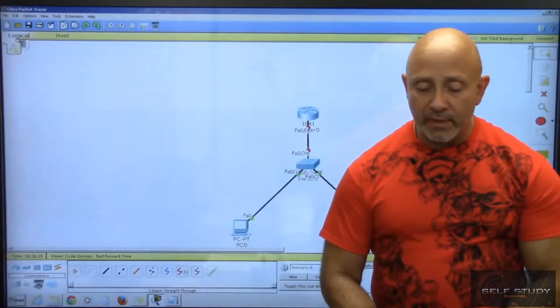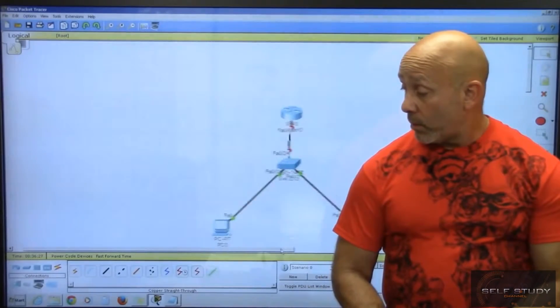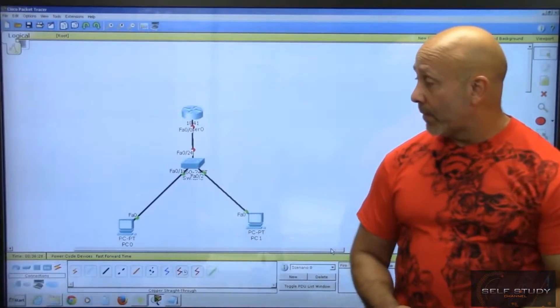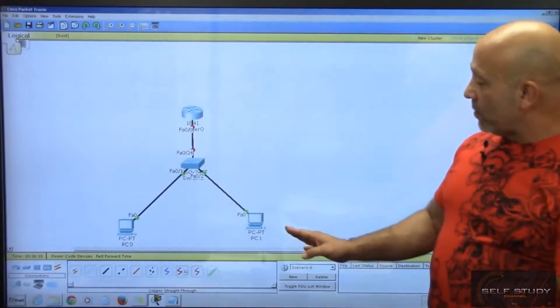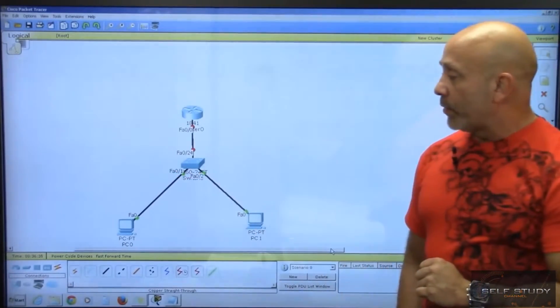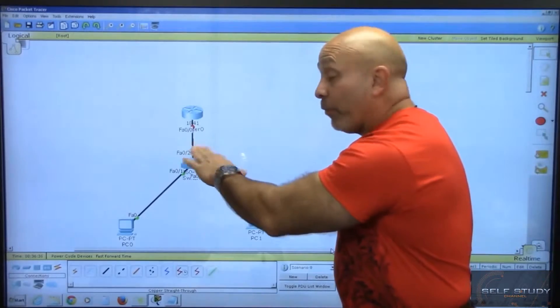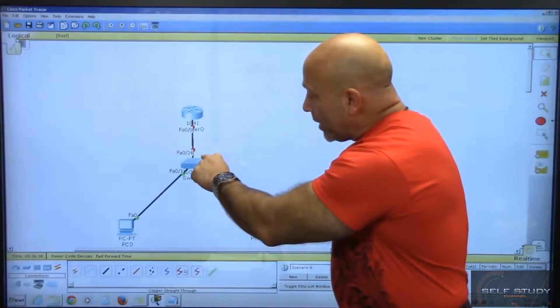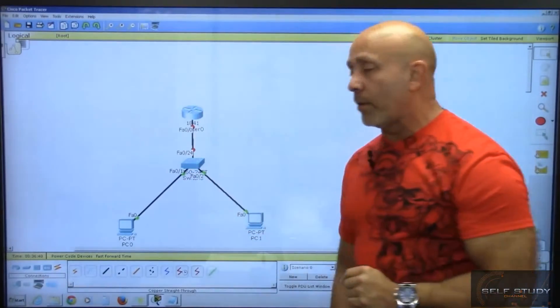Let me move it over here. So you got F00 on the PCs, F01 F02 on the switch, F024 on the switch, and F00 on the router.